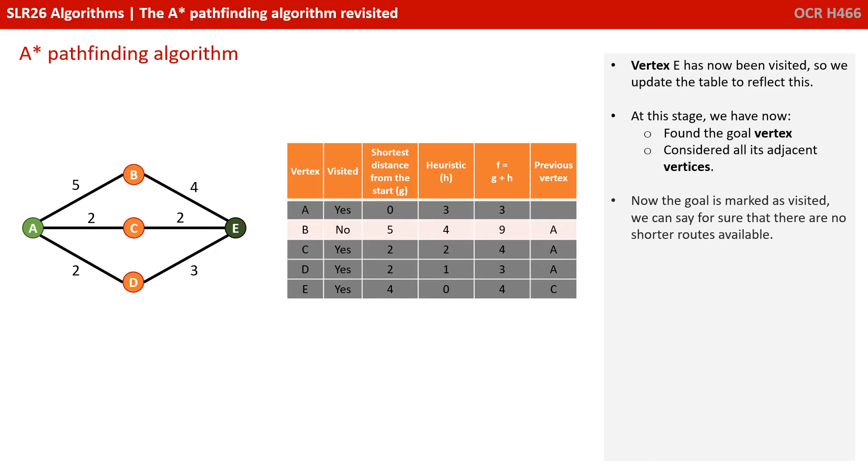Vertex E has now been visited, so we update the table to reflect this. At this stage, we have now found the goal vertex, considered all its adjacent vertices. So now the goal is marked as visited. We can say for sure that there are no shorter routes available.